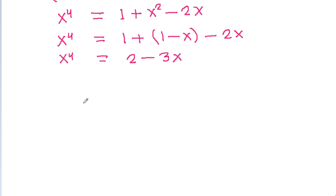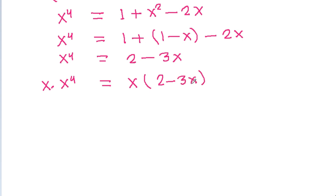If we multiply both sides by x, then x times x power 4 will be equal to x times (2 minus 3x). So x power 5 is equal to 2x minus 3x squared.